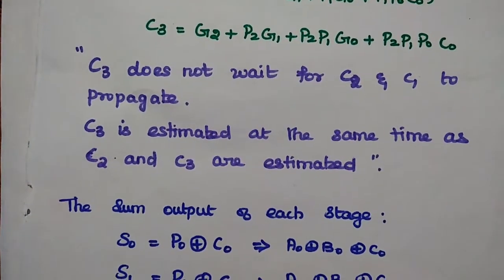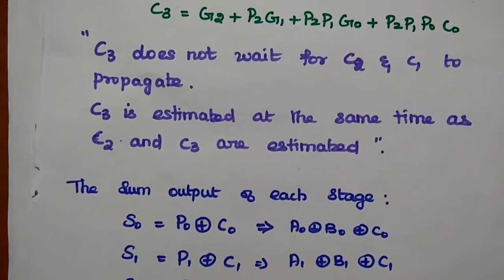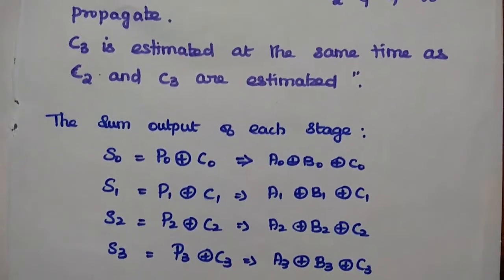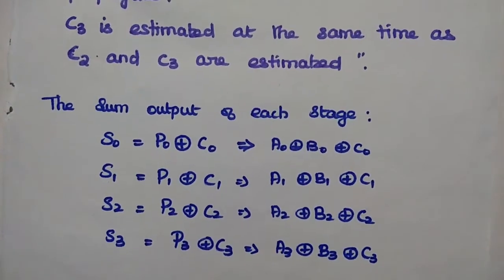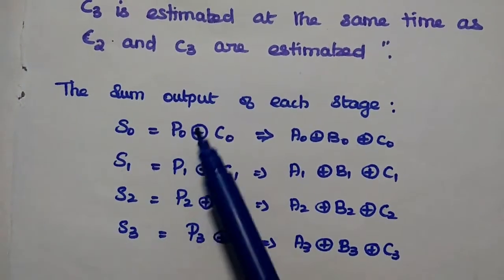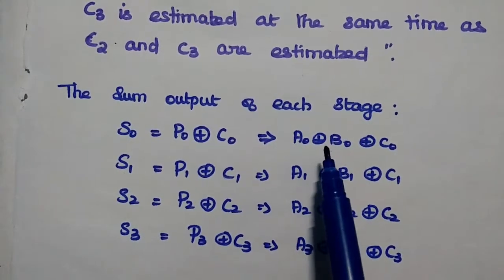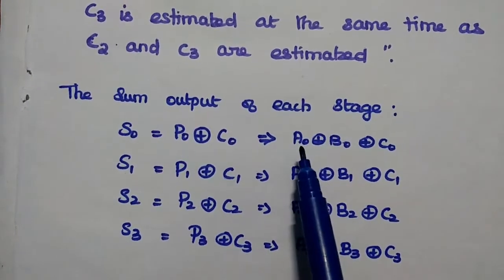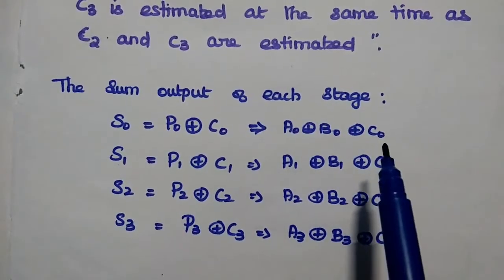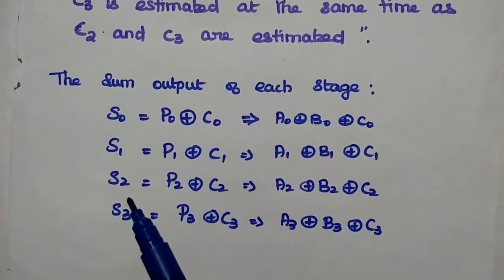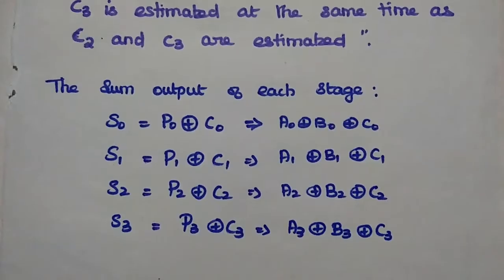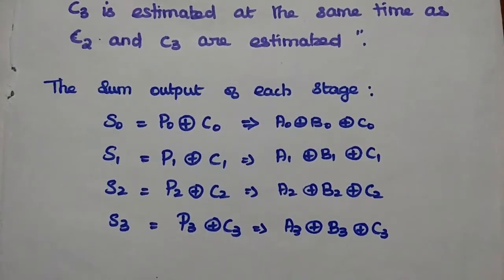This speeds up the operation of the parallel binary adder, hence it is called a fast adder. The sum output of each stage is: S0 = P0 XOR C0, where P0 is the carry propagate equal to the XOR of the two inputs A and B. So S0 can be written as A0 XOR B0 XOR C0. Similarly, we can get S1, S2, and S3. From these Boolean expressions we can draw the logic diagram of the carry lookahead adder.